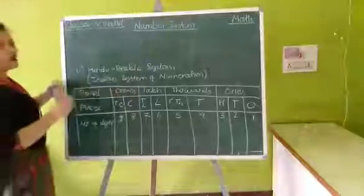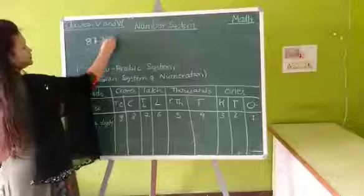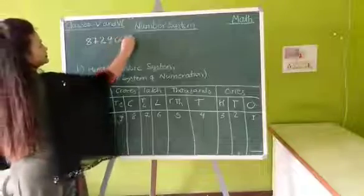So, if you have to write this number. Eight, seven, two, nine, zero, zero, one, eight.